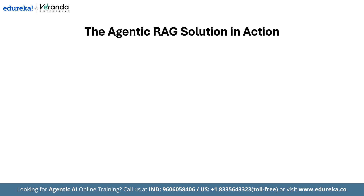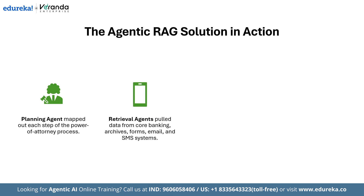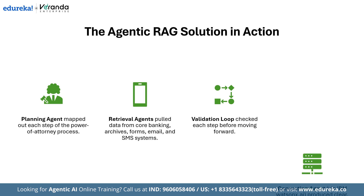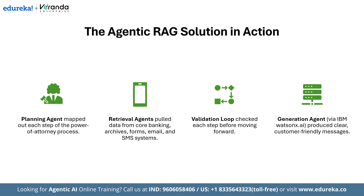Comparers collaborated with IBM to develop a conversational banking assistant utilizing Agentic RAG. The planning agent outlined every individual step in the power of attorney procedure. Retrieval agents accessed various systems such as core banking, archives, form management, email, and SMS APIs to gather exactly what was needed at each phase. The validation loop ensured that each step was completed before proceeding, preventing any overlooked details. The generation agent, utilizing IBM Watsonx.ai, created clear, user-friendly messages that guided the customer through every stage.